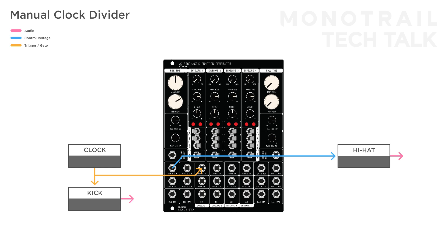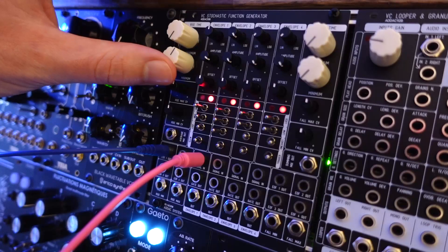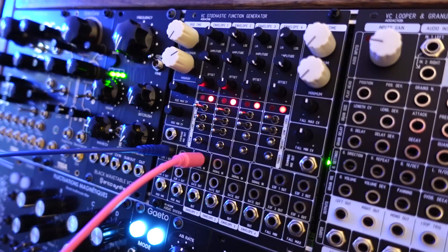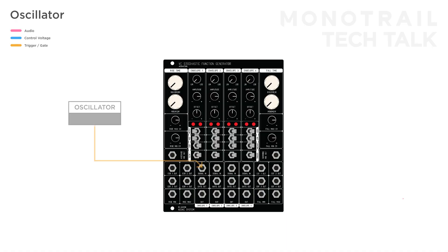When you set the rise time above the speed of the incoming clock, you can set up a manual clock divider — for example, create a divide-by-2 or divide-by-3. If you trigger a channel with an oscillator, a function generator can also be used as an audio source or experimental sub-oscillator with wonky wave-shaping effects.